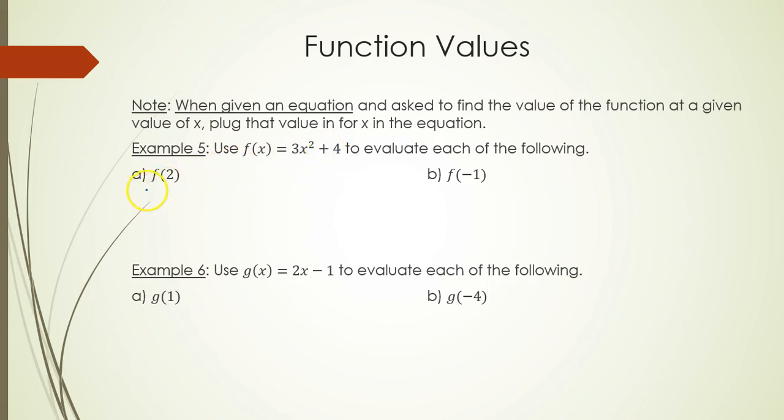If they want you to find f(2), that just means in the equation let x equal 2. So this means I have 3 times 2² + 4. That's 3, order of operations, 2² is 4 plus 4.